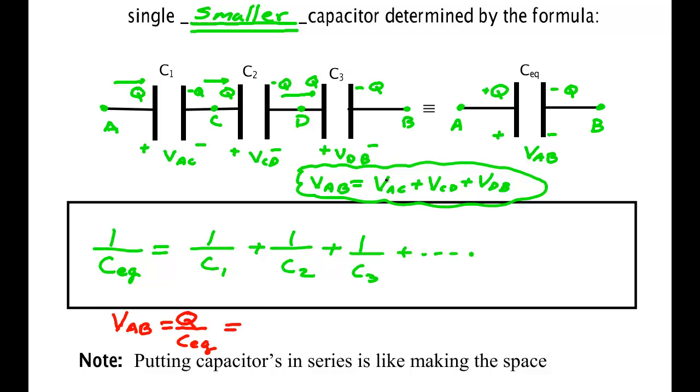But we've just said right up here that it's the sum of these voltages. So voltage VAC, that's the voltage across this capacitor, is equal to the charge on that capacitor divided by its capacitance, C1. The voltage VCD is the voltage across capacitor 2, which is its charge, which is also Q, over C2. And last, the voltage across the third capacitor is Q over C3 and so on and so forth.